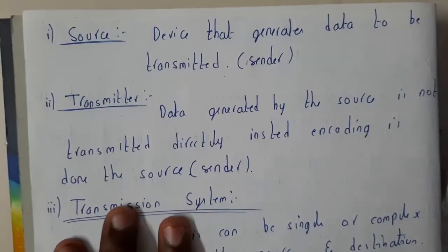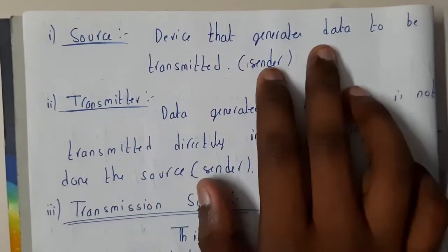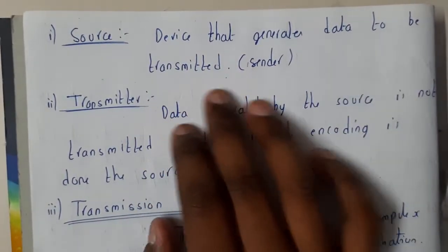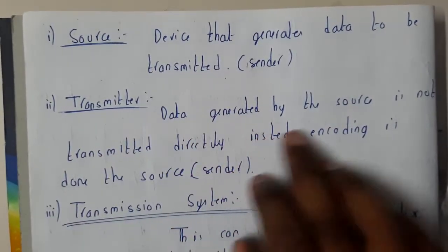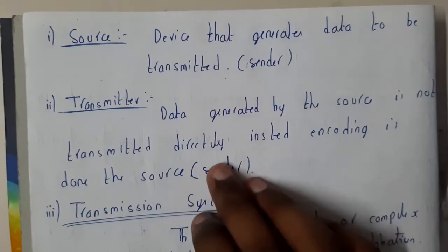Source is the device from which we are sending, the device that generates the data to be sent or transmitted. The transmitter - data generated by the source is not transmitted directly. Instead, encoding and decoding is done for security purposes.